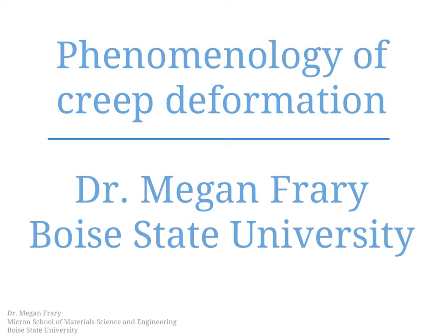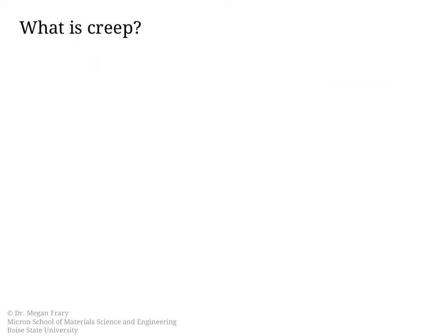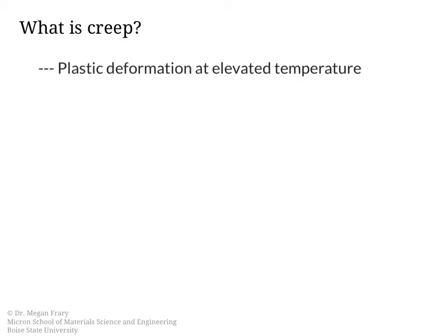In this video we're going to begin looking at creep deformation, considering how the strain changes in time, what the strain rate is, or how the temperature affects the stress. Let's start by defining what creep is. Creep is plastic deformation that occurs at elevated temperature — meaning temperatures greater than about a third to a half of the melting point.